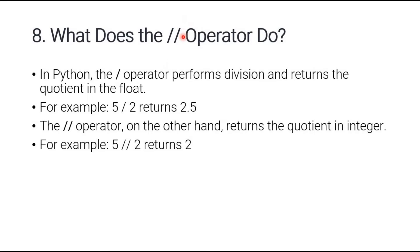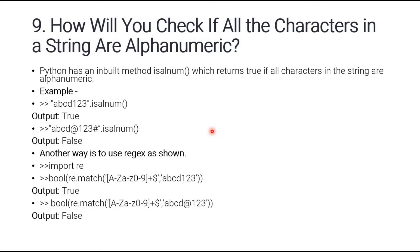Question number eight: what do the division operators do in Python? The single slash operator `/` performs division and returns the quotient as a float — for example, 5 divided by 2 returns 2.5. The double slash operator `//` is the floor division operator and returns the quotient as an integer — for example, 5 divided by 2 returns 2.